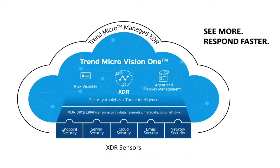As customers undoubtedly have other security tools or technologies deployed in their environment, Trend Micro offers a growing portfolio of open APIs and integrations to third-party systems like SIEM and SOAR and more, so Trend Micro Vision One can fit within their ecosystem and security operations workflows. With these integrations, we can also acquire meaningful data from a customer's infrastructure to further enrich and validate our XDR detection capabilities.